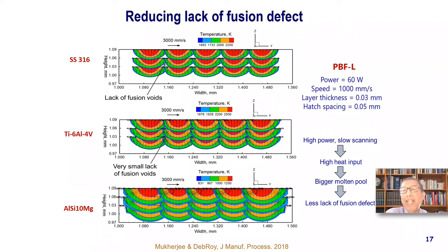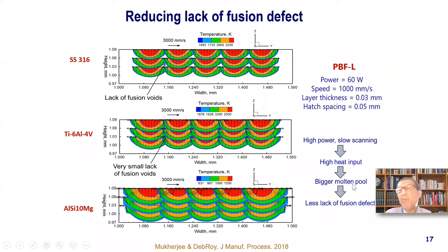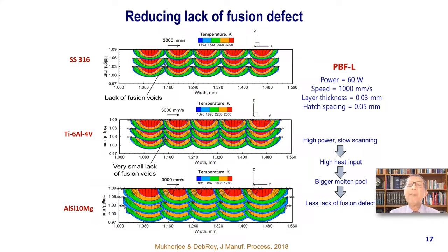Lack of fusion is easily preventable: higher power or slower scanning — in other words, high heat input per unit length — means bigger pools, and bigger pools mean fewer lack-of-fusion defects. So lack of fusion defects can be prevented using modeling. In summary, we can calculate temperature and velocity fields, and use them for understanding microstructure, properties, and defects.